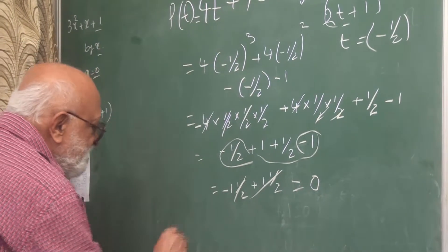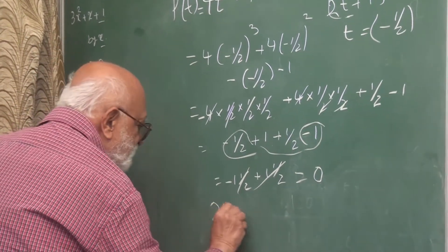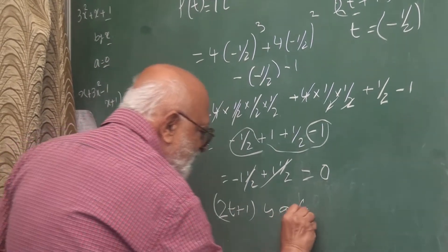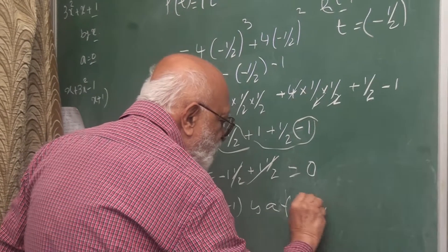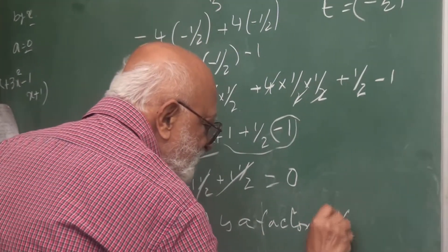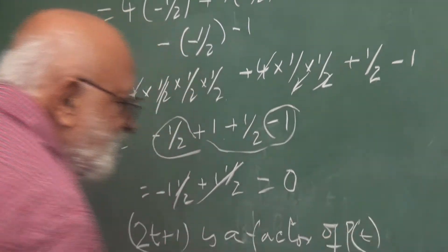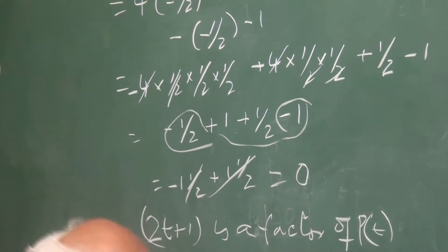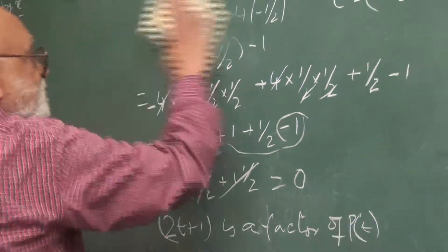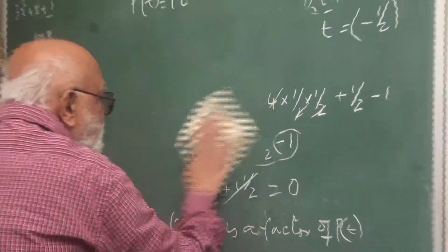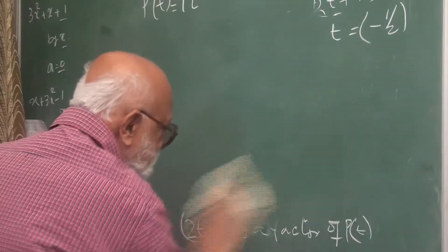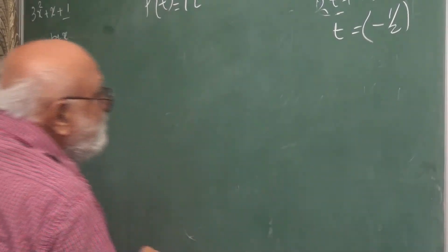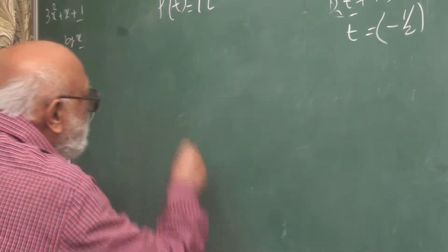So, which means 2t plus 1 is a factor of P(t). This is one way. I will show you a faster way of doing the same thing — I will use synthetic division in order to show that the remainder again becomes 0.